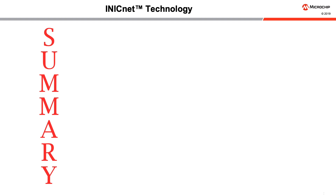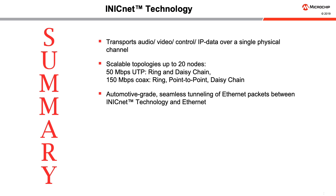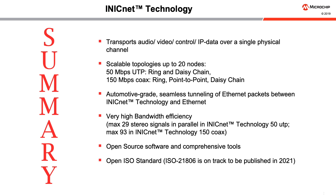In summary, iNICnet technology transports audio, video, control, and IP data over a single physical channel. It is scalable with up to 20 nodes, providing either 50 megabits per second over unshielded twisted pair cables in a ring or daisy chain, or 150 megabits per second over coaxial cable in a ring, point-to-point, or daisy chain connection. iNICnet technology provides automotive-grade seamless tunneling of Ethernet packets between iNICnet and Ethernet. It has very high bandwidth efficiency, allowing for 29 stereo channels with iNICnet 50 UTP or 93 stereo channels with iNICnet 150 coax. Open source software is available for drivers used in a variety of operating systems. Microchip's Unisense software stack provides simplified network management, and Microchip also offers a comprehensive toolchain to speed up the design and development process. iNICnet technology is already part of an international open standard expected to be published as ISO 21806 in 2021.